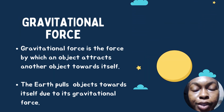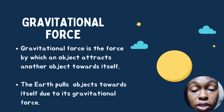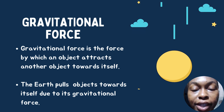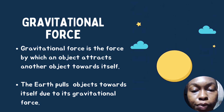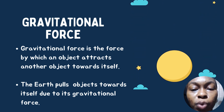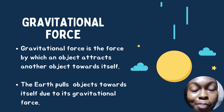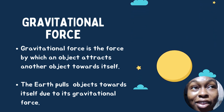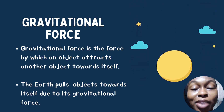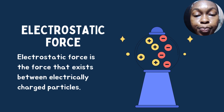The second is gravitational force. Gravitational force is the force by which an object attracts another object towards itself. For example, the earth pulls objects towards itself due to its gravitational force — that is why anything that goes up will always come down. If you throw a ball into the air, it will surely come down.